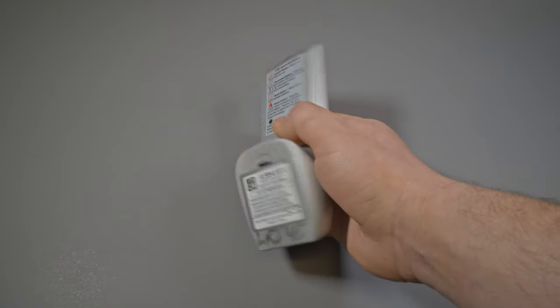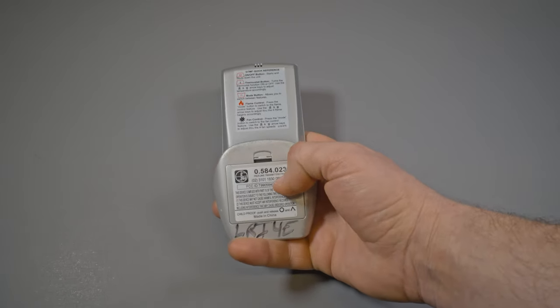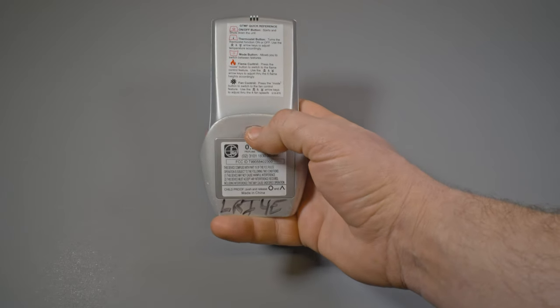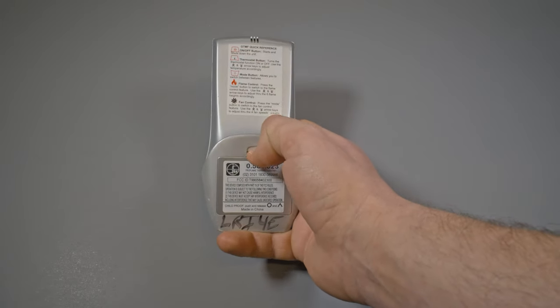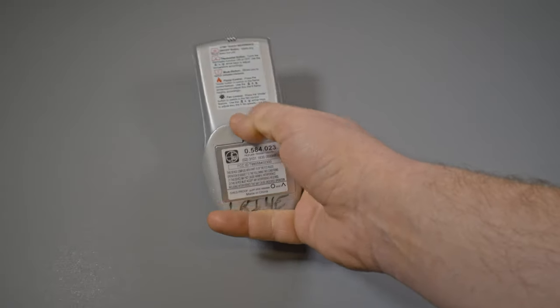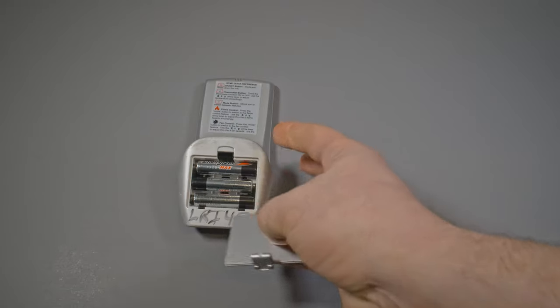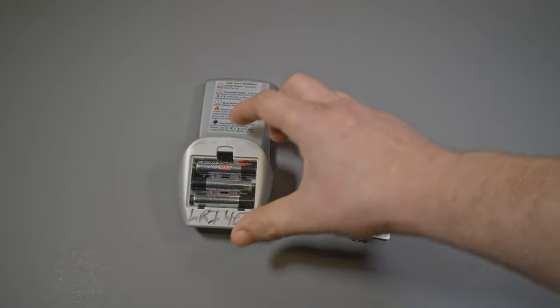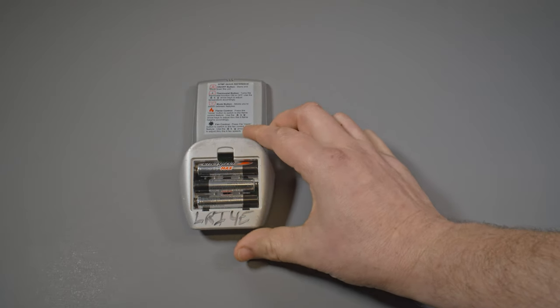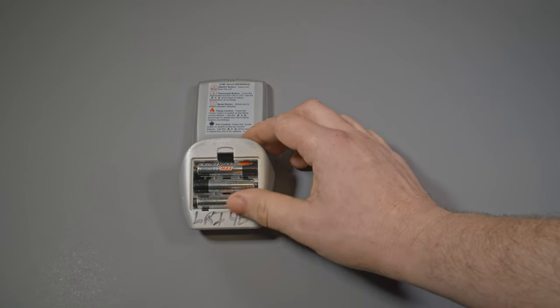We'll take a look at the back side of the unit here. First of all, we do have batteries, so let's pop this compartment off. And it's just three AAA batteries that are going to sit in the back of your remote. These are going to need to be replaced at least once a season, burn season that is.